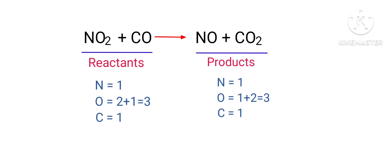If you observe this equation, the number of atoms at the reactants side are the same as the number of atoms at the products side. In the reactants side there are 1 nitrogen atom, 3 oxygen atoms, and 1 carbon atom present. And the products side there are 1 nitrogen atom, 3 oxygen atoms, and 1 carbon atom present.